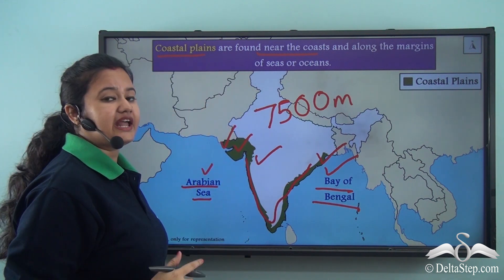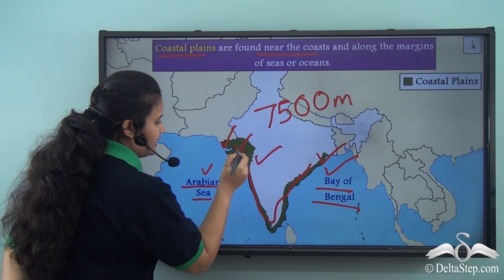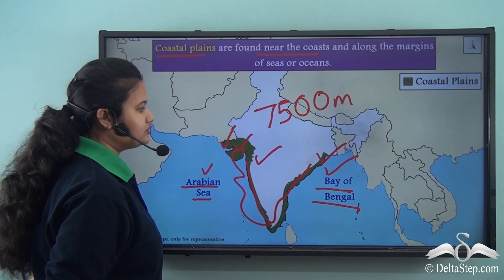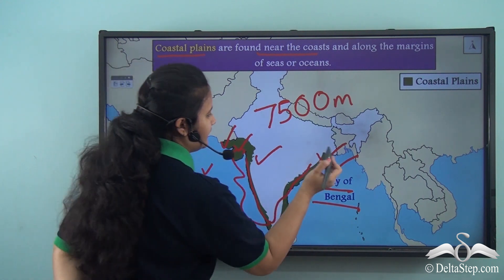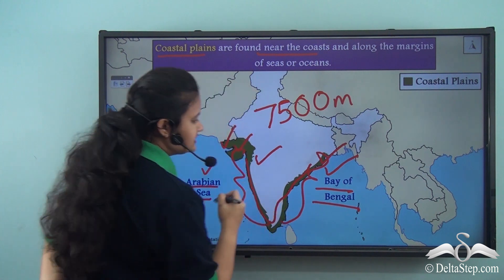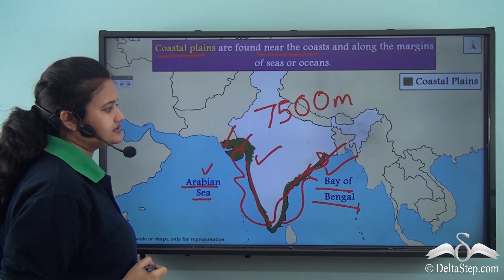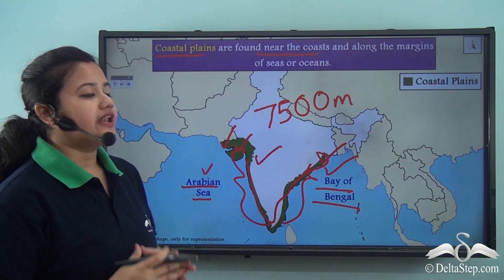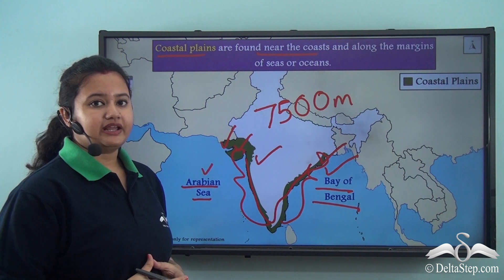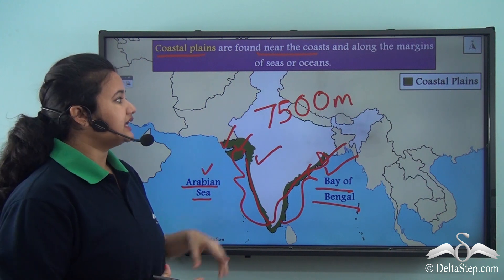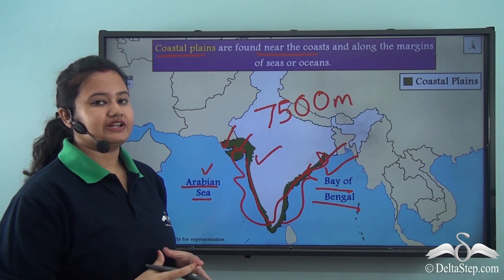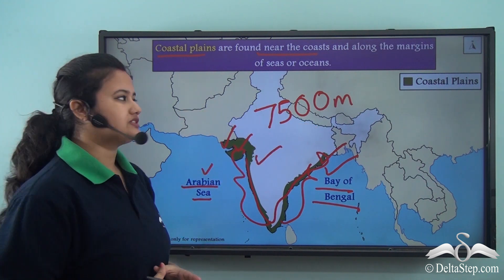The coastal plains extend from Gujarat in the west to Odisha in the east. They can be divided into two parts: the Western Coastal Plains lying in the west and the Eastern Coastal Plains lying in the east. There is another plain present in the northern part of the country — let's learn about it.